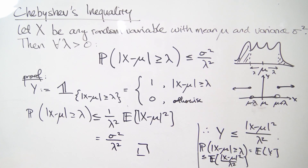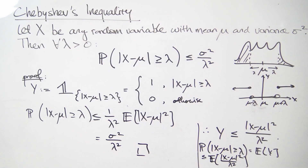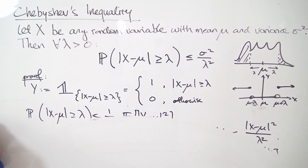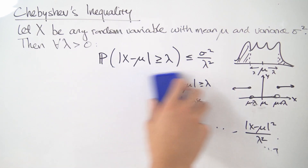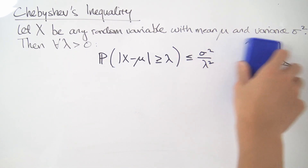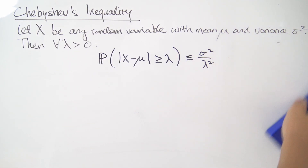So the probability of finding yourself in the tail end is bounded above by sigma squared over lambda squared, and this works for all random variables — that's pretty much the proof of Chebyshev's inequality. There are quite a few other variations of this as well, but this is the version from my notes for my subject.